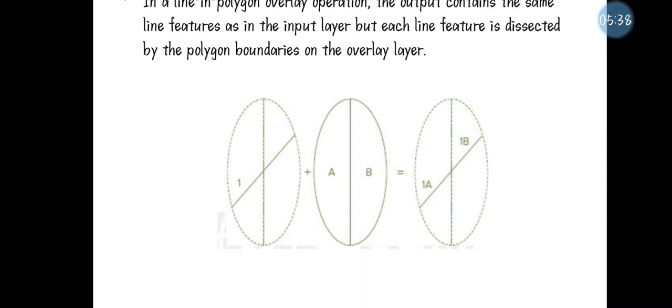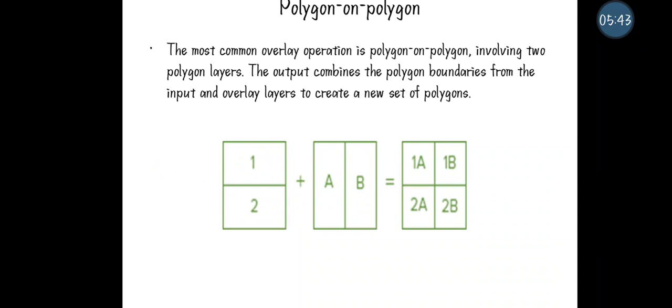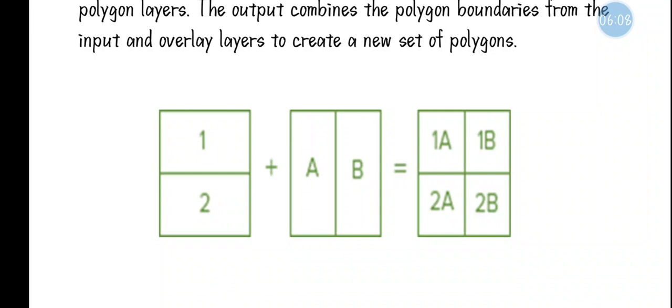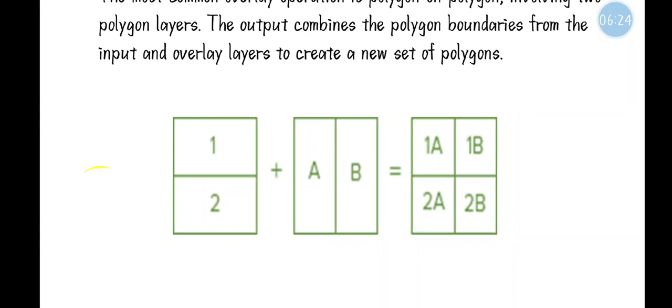The next type is polygon on polygon. Here both inputs are polygons, so there is no lower dimensional feature type to consider — both are the same feature type. The resultant geometrical feature remains a polygon, and the attribute data of both inputs is combined. The upper part becomes '1A' and '1B', and the lower part becomes '2A' and '2B'.